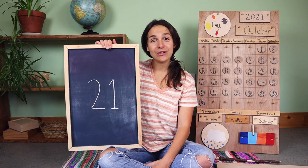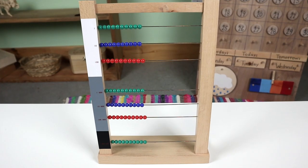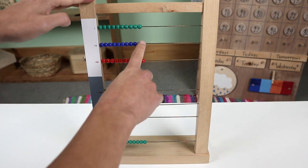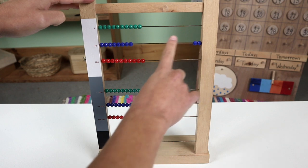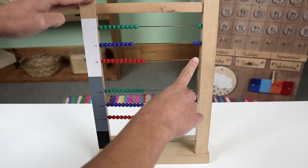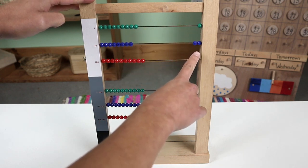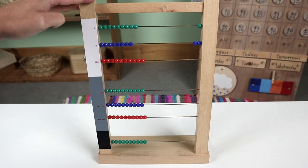Let's count to the number 21 together using the large bead frame. This is how you count to the number 21 using the large bead frame: 10, 20, one — two tens, one unit — 21.